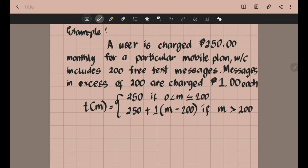Therefore, if we have T of 5, because only 5 messages were sent, we have T of 5 equals 250 because we used formula 1. This is because the number of text messages is between 0 and 200.